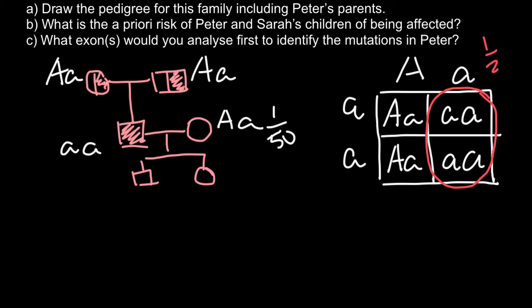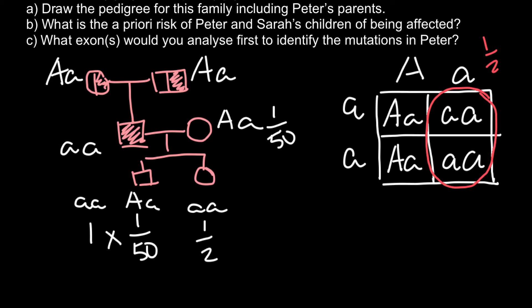Our full calculation: probability the father is homozygous recessive = 100%; probability the mother is heterozygous = 1/50; probability the child is also homozygous recessive given those parental genotypes = 1/2. Multiplying these independent probabilities: 1 × 1/50 × 1/2 = 1/100, or 1% probability for each child to be affected.